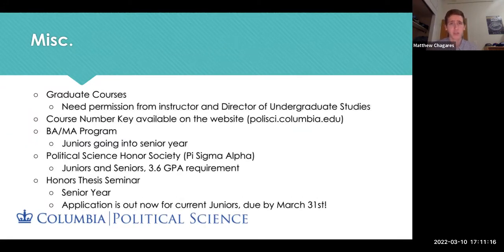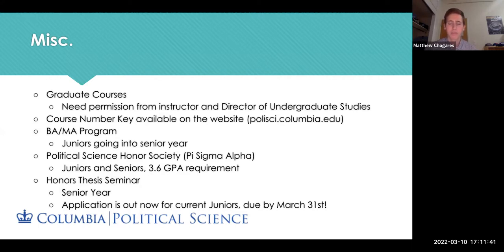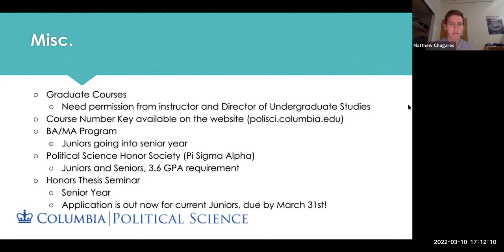One thing to note is graduate courses — if you see them in the directory, you'll need permission from the instructor and the Director of Undergraduate Studies to enroll. Another helpful resource is the course number key on the department website, which shows which number corresponds to which subfield so you can easily confirm which courses count where. There's also a BA/MA program for juniors going into senior year, beneficial for those wanting a master's degree — look out for that.